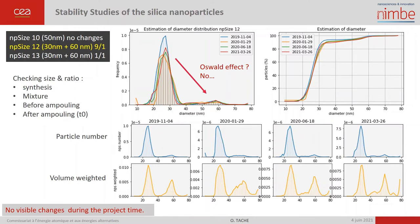In blue, you have the estimated diameter distribution by number, and in orange, the volume-weighted distribution, which shows there are two separated populations.